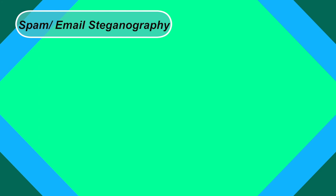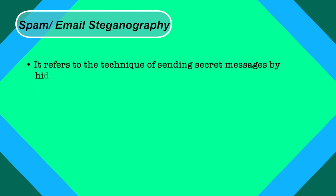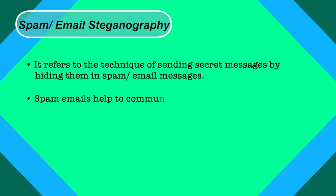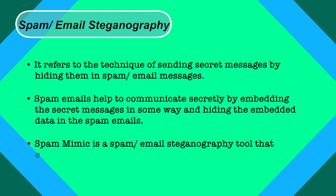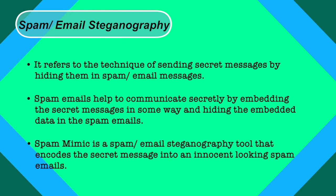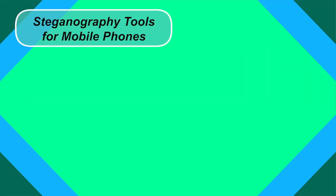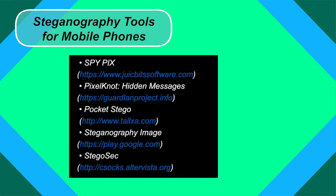Spam or email steganography refers to the technique of sending secret messages by hiding them in spam or email messages. Spam emails help communicate secretly by embedding secret messages in the spam. Spam Mimic is a tool that encodes the secret message into an innocent-looking spam email. There are also various steganographic tools specifically designed for mobile phones, including Spy Pics, Pixel Not Hidden Messages, Pocket Stego, Steganography Image, and Stegosec.